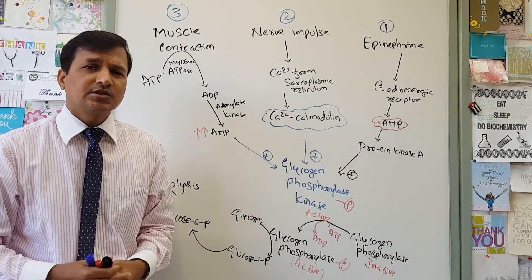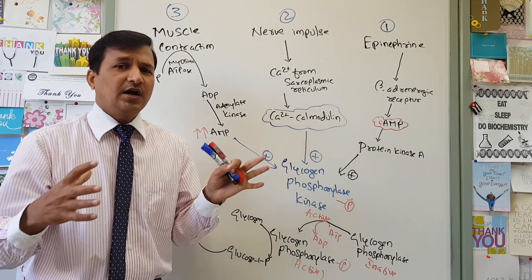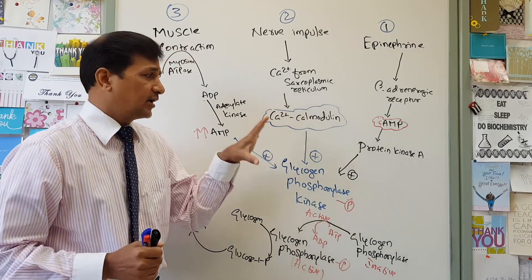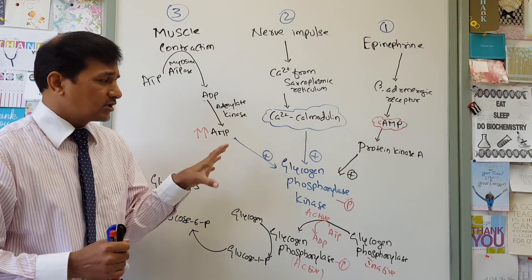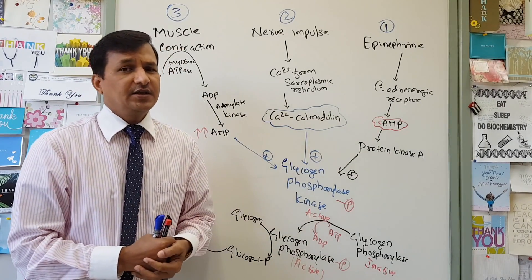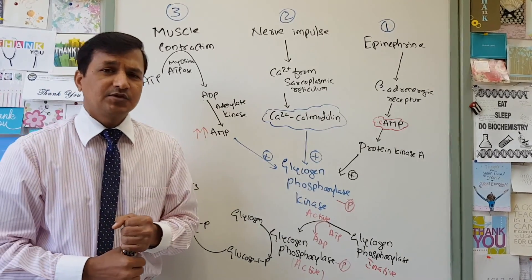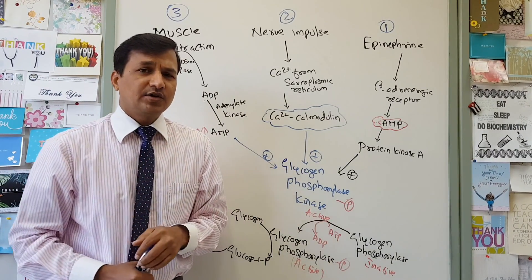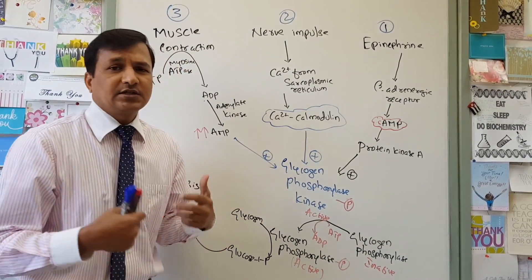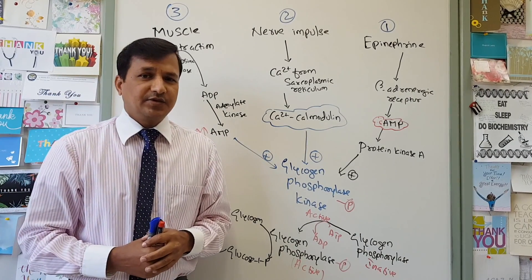This is all about regulation of glycogen metabolism specifically in the liver and skeletal muscle. I hope this video has helped you understand this complex process of glycogen synthesis and degradation in these two tissues. Thanks for watching — make sure to subscribe to the channel and leave any questions in the comments below.